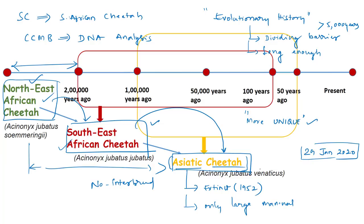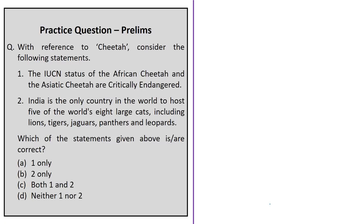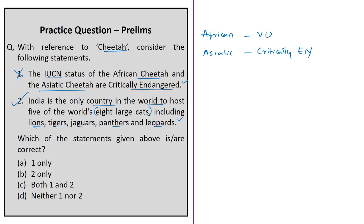In the practice question on cheetahs, statement one says the IUCN status of both the African cheetah and the Asiatic cheetah is critically endangered — this is incorrect. The IUCN status of the African cheetah is 'Vulnerable' while the Asiatic cheetah is 'Critically Endangered.' Statement two says India is the only country in the world to host five of the eight large cats — lions, tigers, jaguars, panthers, and leopards — this is correct. The remaining three large cats are puma, cheetah, and cougar. Therefore, the right answer is option B — only statement 2.